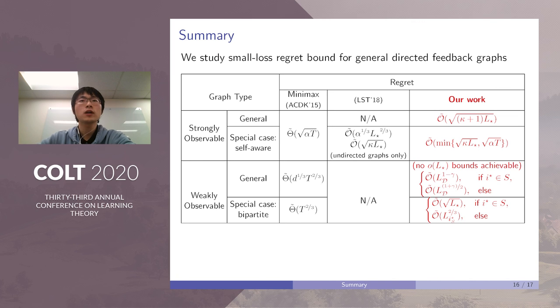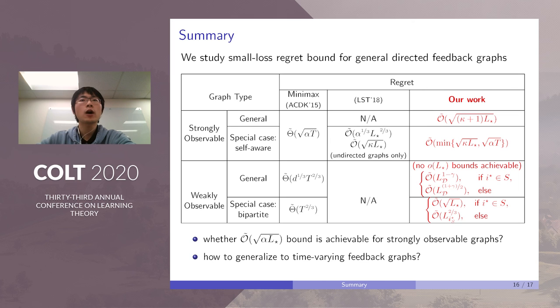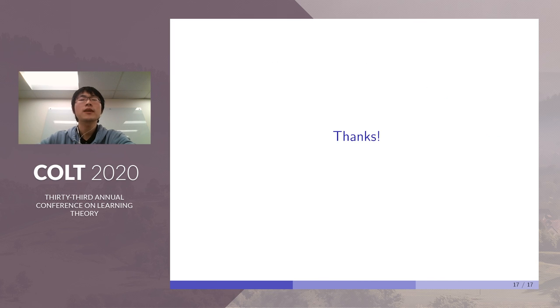To summarize, in this work, we study how to obtain a small-loss regret bound for general directed feedback graphs. And there are two possible open problems. The first one is whether √(αL*) bound is achievable for strongly observable graphs, as the minimax regret for this type of graph is √(αT). Second one is how to generalize these results to time varying feedback graphs. Both problems may require new ideas. Thanks for your attention.